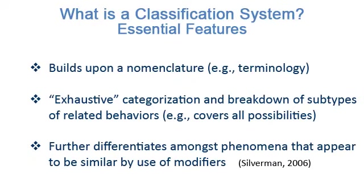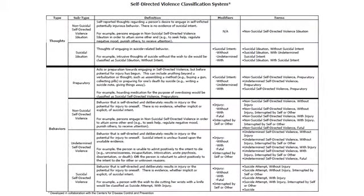Whereas a nomenclature is a taxonomy of terms and definitions related to a particular topic, a classification system is a more exhaustive categorization and breakdown of subtypes of related phenomena. In relation to suicide, a classification system would be used to help organize subtypes of behaviors via use of modifiers that help to differentiate one behavior from another. We'll now introduce you to the VISN-19 MIRAC CDC self-directed violence classification system. Please access your first handout, which is the classification system.